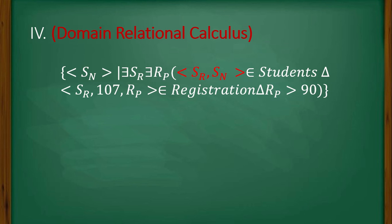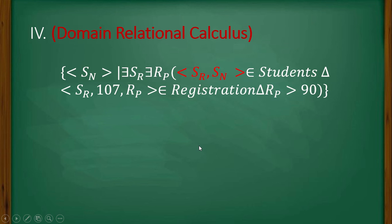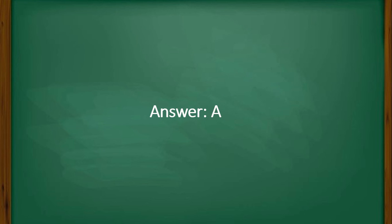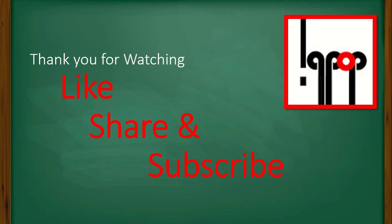The fourth query is domain relational calculus. sn is a domain such that there exist sr and rp. (sn, sr) belongs to student, and (sr, 107, rp) — that is roll number, subject number, and percent of marks — belongs to the registration table, where percent of marks rp is greater than 90. This is also equivalent to the original query. So all four given queries do the same thing as the English query, and the answer is A. Thank you for watching — like, share, and subscribe.